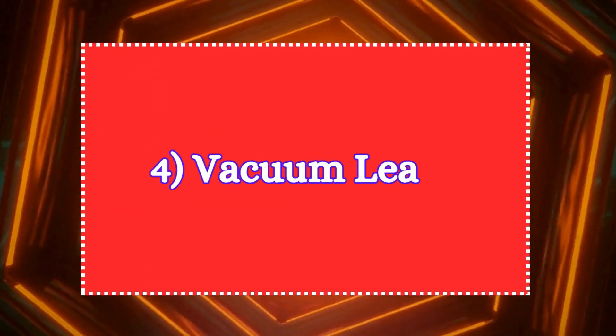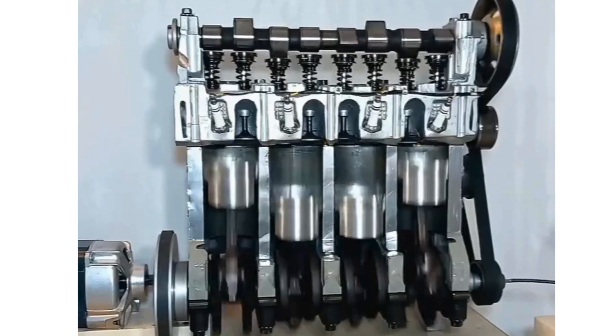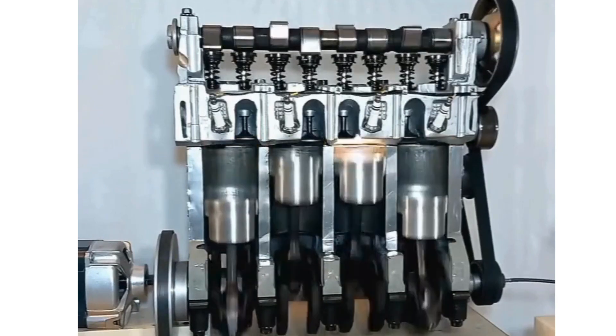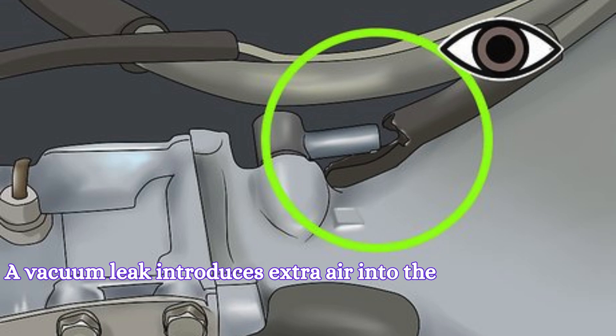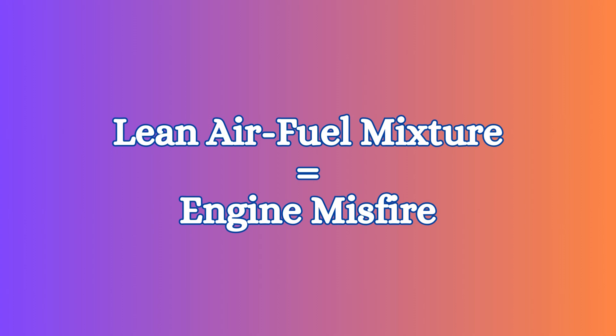Fourth, vacuum leaks. Your engine relies on a precise air-fuel mixture for efficient combustion. A vacuum leak introduces extra air into the engine, throwing off this balance and causing the engine to run lean. This can result in misfires.